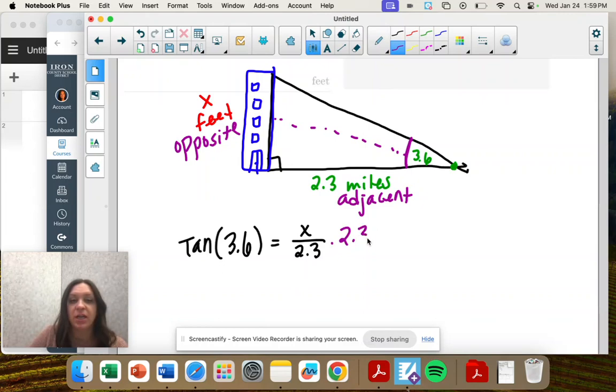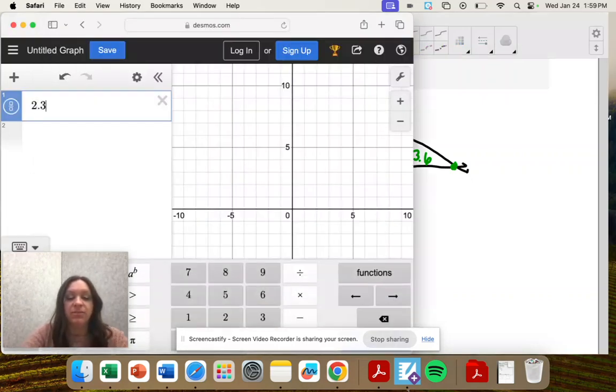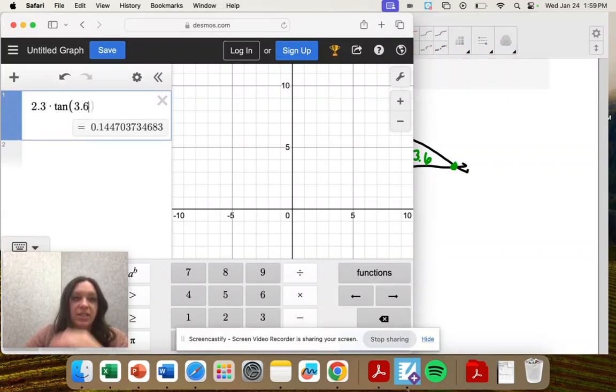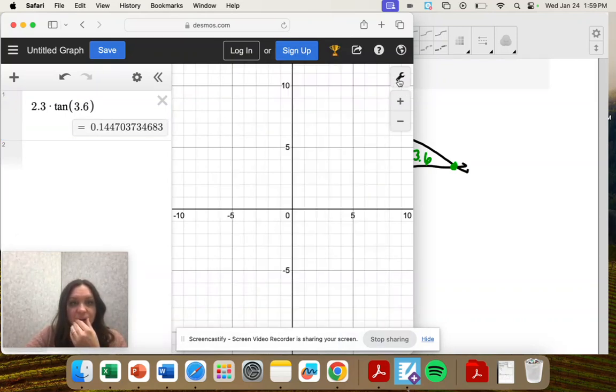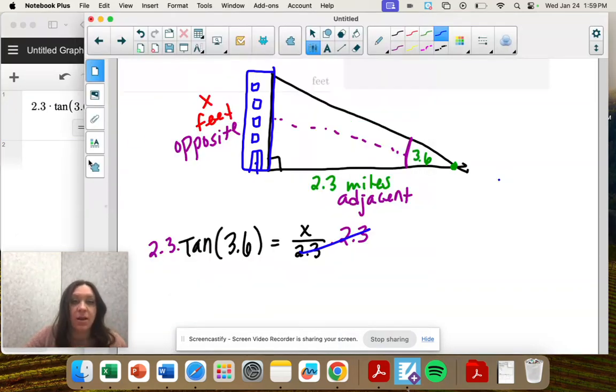To solve for x, we times by 2.3. And that goes in the calculator. So 2.3 times tangent of 3.6. And the number is super tiny because it's in miles and we need it in feet. So 0.1447.